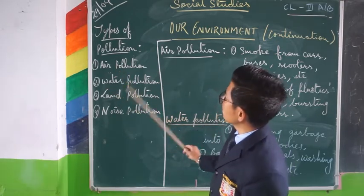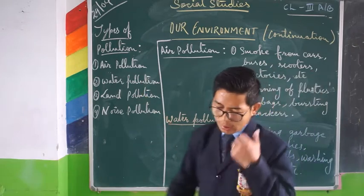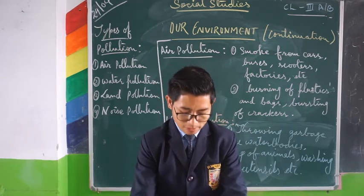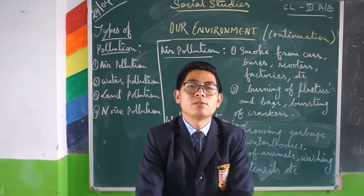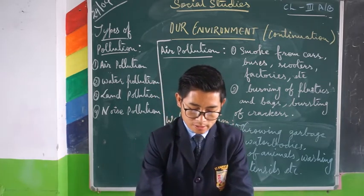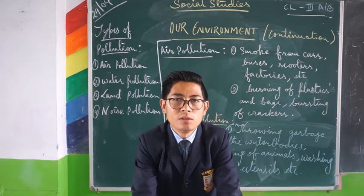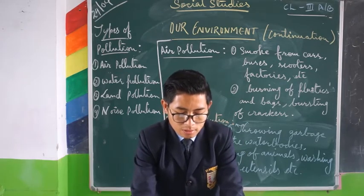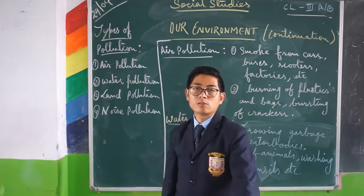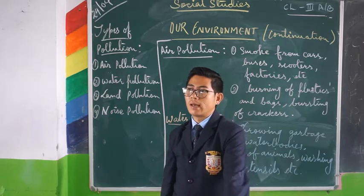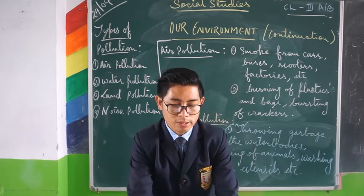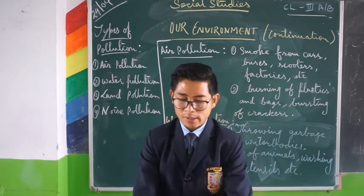The types are: air pollution, water pollution, land pollution, and noise pollution. Now what exactly does pollution mean? Pollution is the contamination of harmful substances in the environment — whether it is water, air, land, or others. It harms our environment, it pollutes our environment, it affects our environment and is also harmful for human beings and other animals. So we should not pollute the environment; we should take care of it.